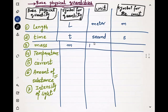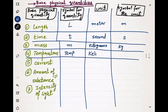The third quantity is mass, represented by smaller m. Its unit is kilograms and the symbol for the unit is kg. The fourth quantity is temperature. The unit for temperature is Kelvin — Kelvin is the absolute temperature — and it is represented by K.